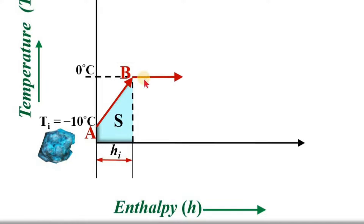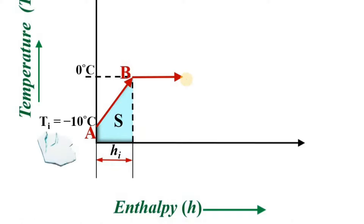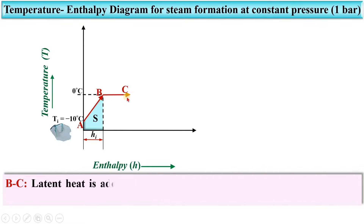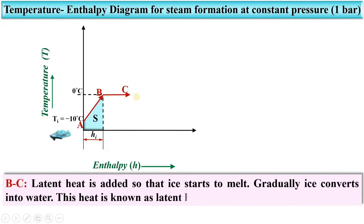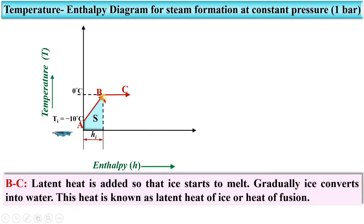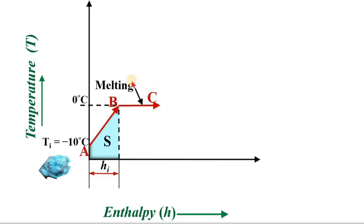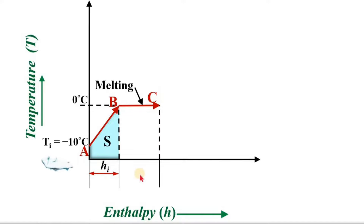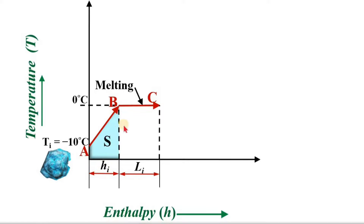If you further supply heat it will reach point C. During the process B to C, latent heat is added so that the ice starts to melt. Gradually ice converts into water, and this is known as the latent heat of ice or the heat of fusion — the melting process. Remember: due to sensible heat the temperature rises, and due to latent heat the phase changes.